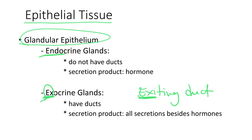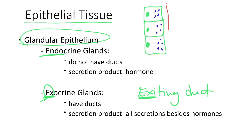In endocrine glands, what we see is that the epithelial cells forming the secreting portion of the gland are tightly packed together, because this is an epithelial tissue. And what we see is that the product produced by the endocrine gland is secreted into the bloodstream — it goes directly into the bloodstream. We have capillaries, which are the thinnest blood vessels we have, going through the organ. And the product produced by the endocrine gland is released directly into the bloodstream.